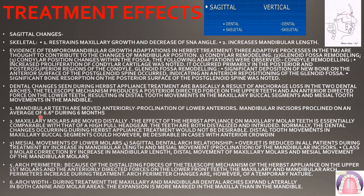The dental changes are: first, the lower teeth are moved anteriorly — the mandibular incisors are proclined on an average of 6.6 degrees during six months of treatment. Then the maxillary molars are moved distally, and the mandibular molars are moved mesially — there is mesial movement of the lower molars.